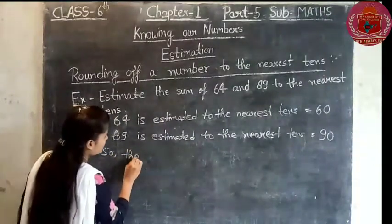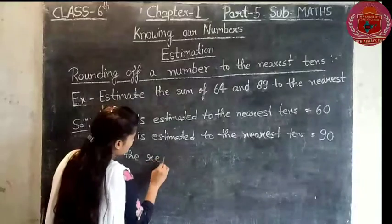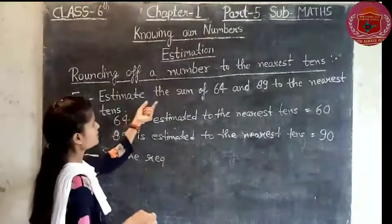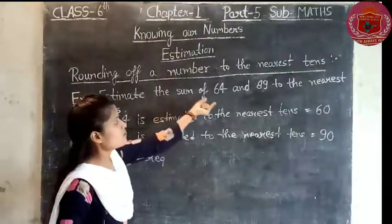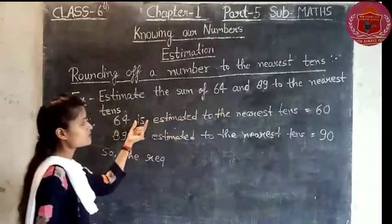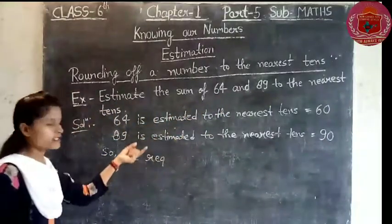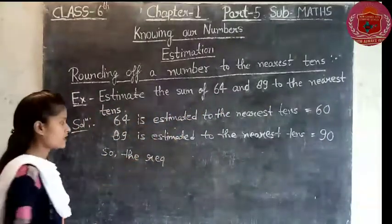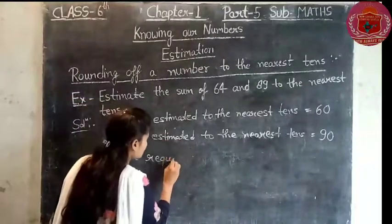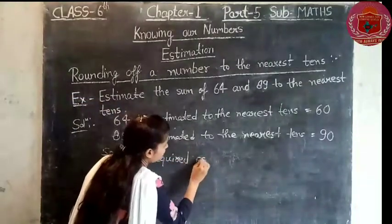So the required estimated sum equals 60 plus 90. The estimated sum is 150.